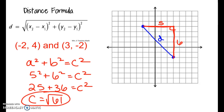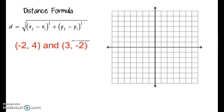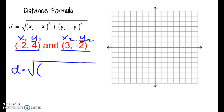Now let's do it using the distance formula — same problem but plugging into the formula. First, label your points: x₁ = -2, y₁ = 4, x₂ = 3, y₂ = -2. X always comes first, y comes second. Notice my ones are all together and my twos are all together. Then we copy down the formula: my x₂ is 3 minus my x₁ which was negative 2 — notice I kept the same sign and brought that negative 2 with. It's important to keep all your signs the same.